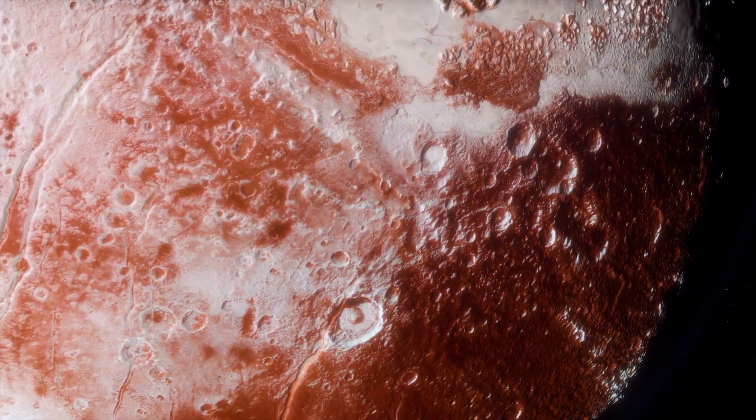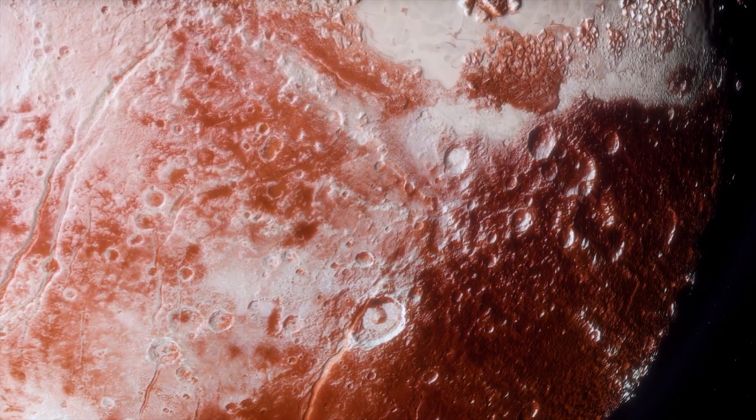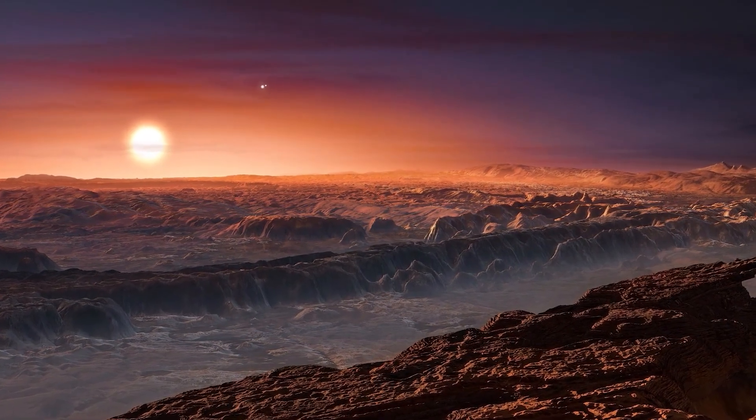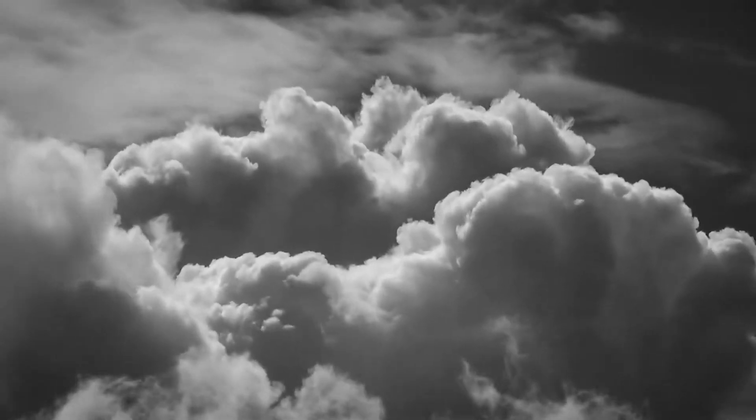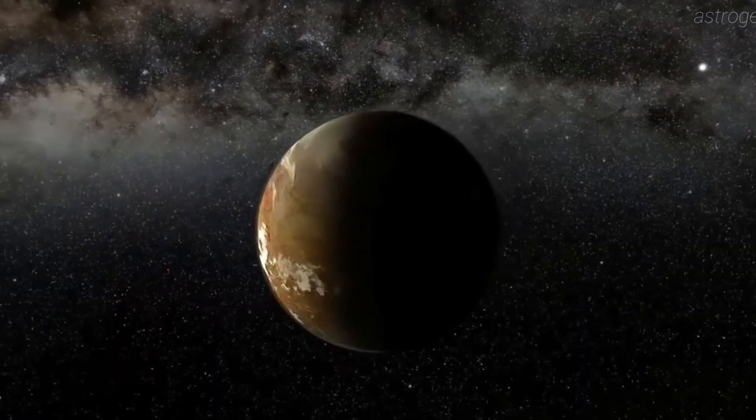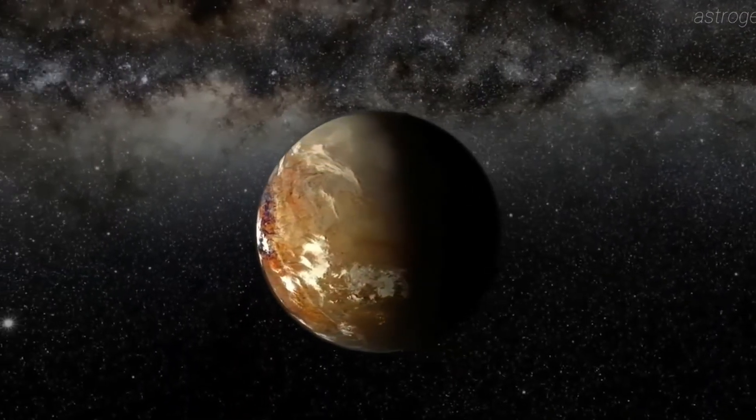However, red dwarf stars are not as hot as yellow dwarf stars like our sun. So, there is a chance that water exists on Proxima b, and that it has an atmosphere that protects it from intense heat while also dispersing heat to its dark side.